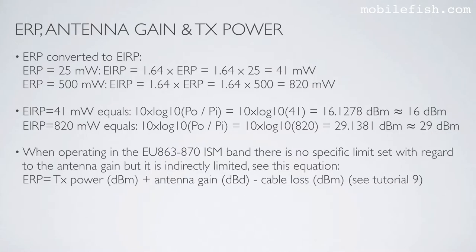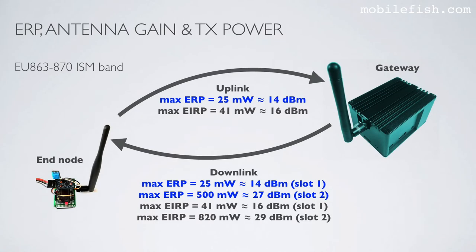When operating in the AU863 to 870 ISM band, there is no specific limit set with regard to antenna gain, but it is indirectly limited. Using the ERP or AERP equation, if ERP or AERP is limited, then the antenna gain is indirectly limited. This overview applies only to the AU863 to 870 ISM band, showing the maximum uplink values and the maximum downlink values for slot 1 and slot 2.